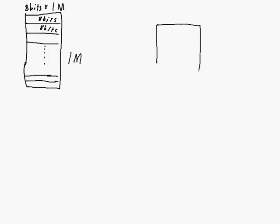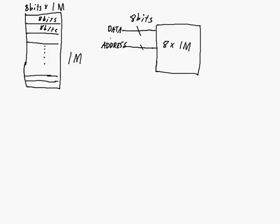Let me redraw it over here. So we've got this memory block, and coming into it we're going to have 8 bits of data. This data is bidirectional because you want to write data in and read data out. We're also going to need some bits to specify which one of these 1 meg locations we want to access when reading or writing. To get 1 meg worth, we're going to need 20 bits for the address.